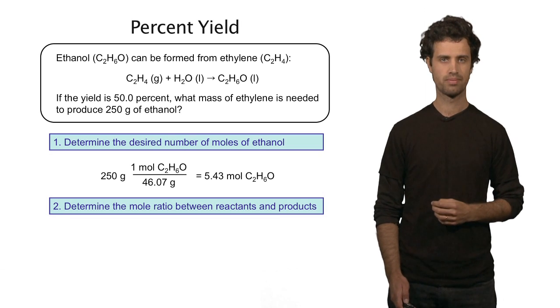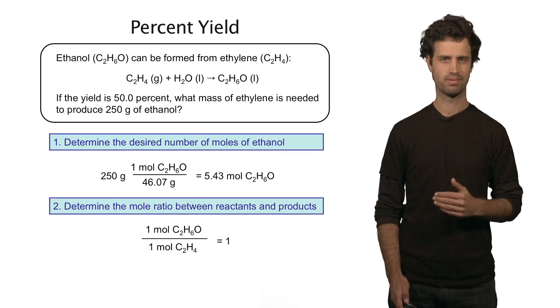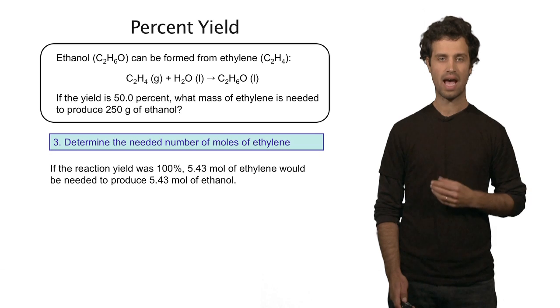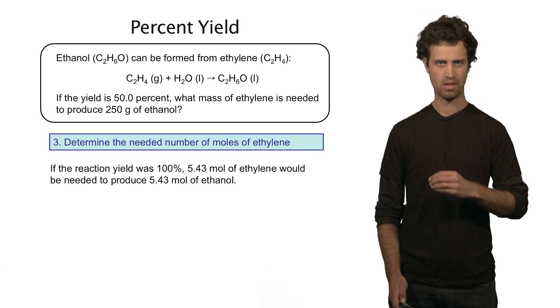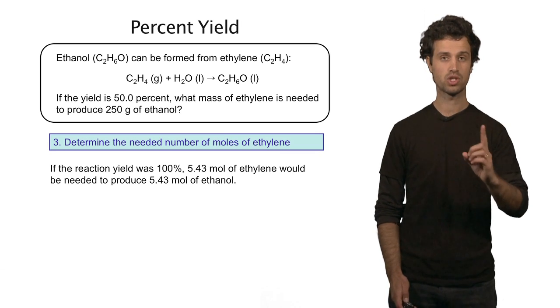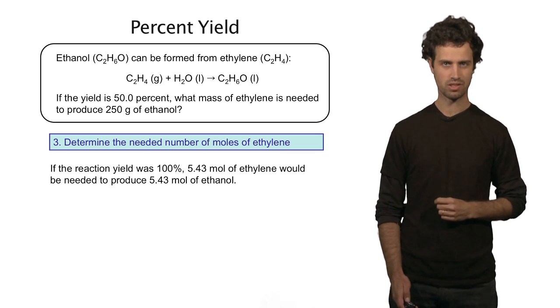So that means I would need 5.43 moles of ethylene to form 5.43 moles of ethanol. But this is only true if the reaction yield is 100%.